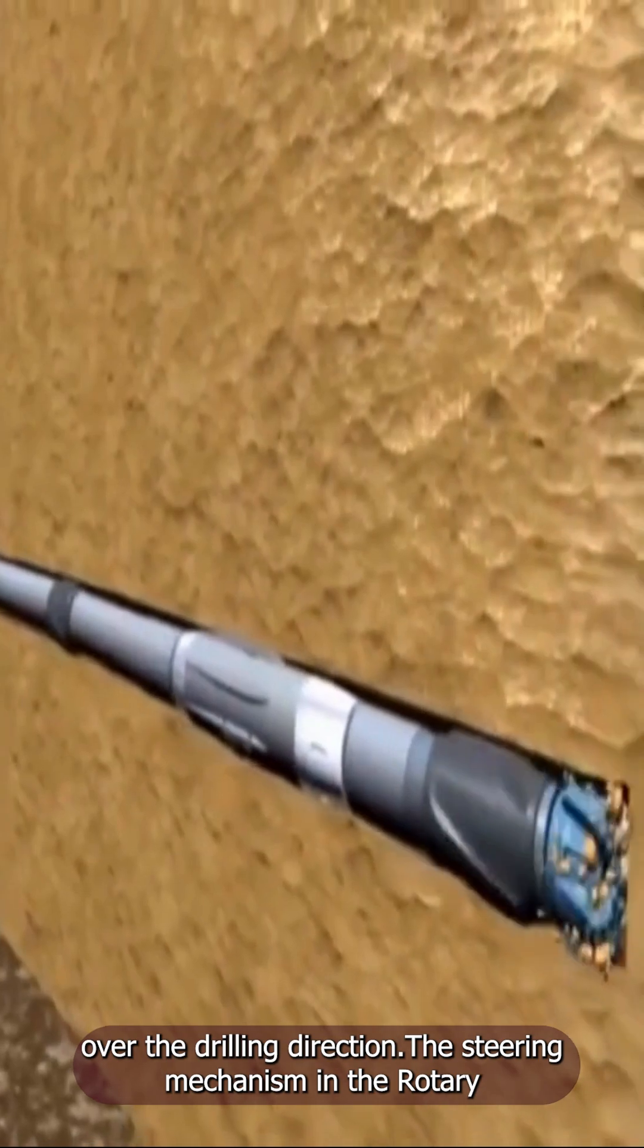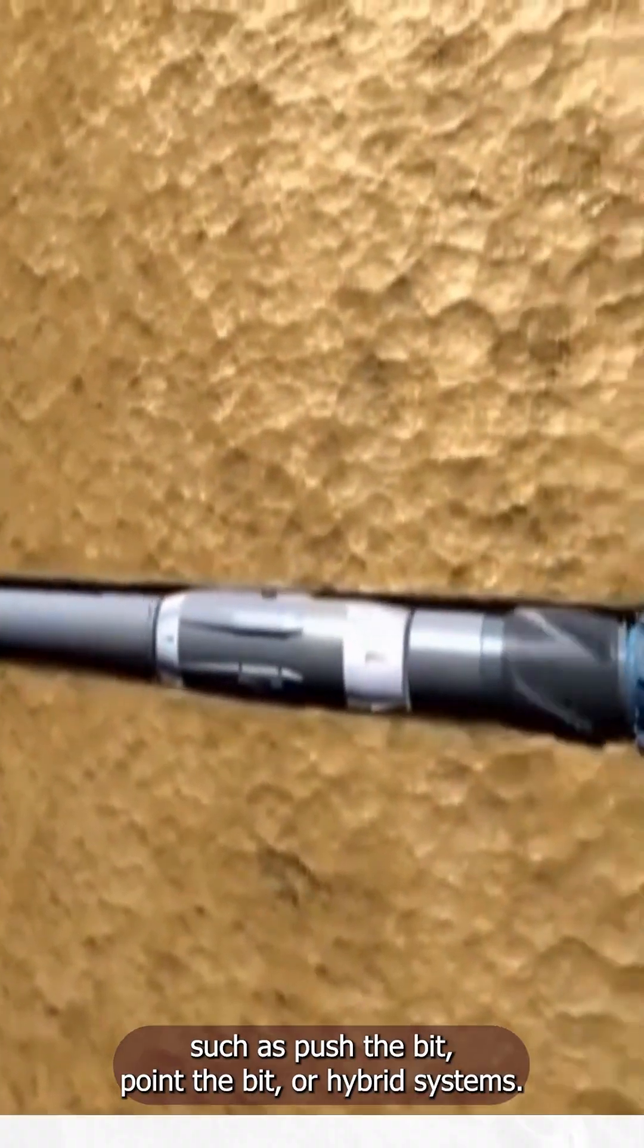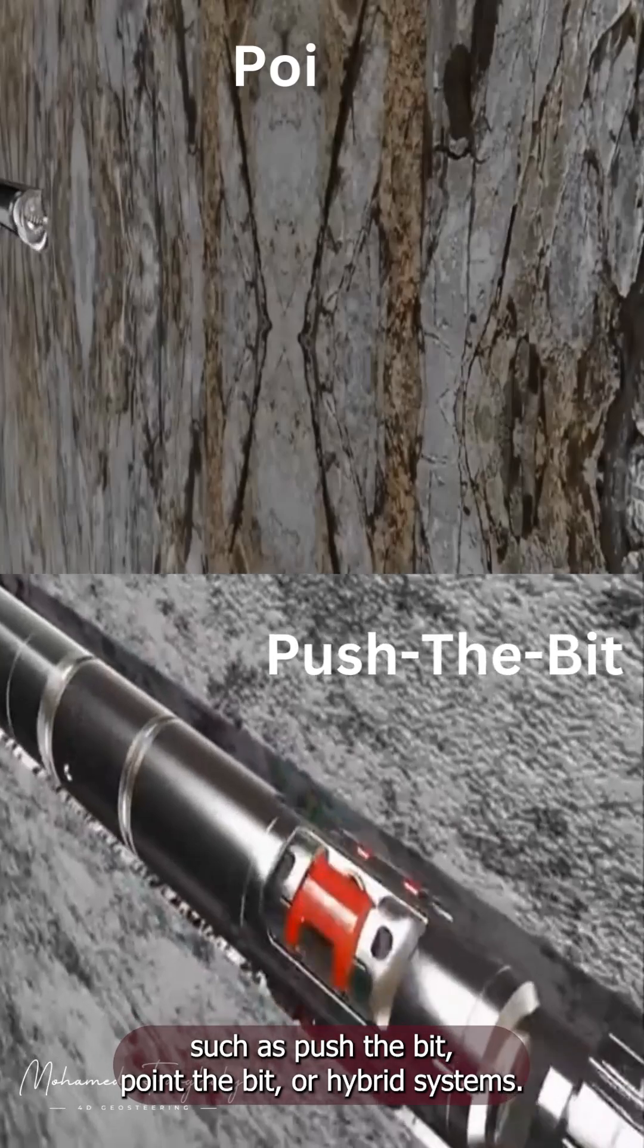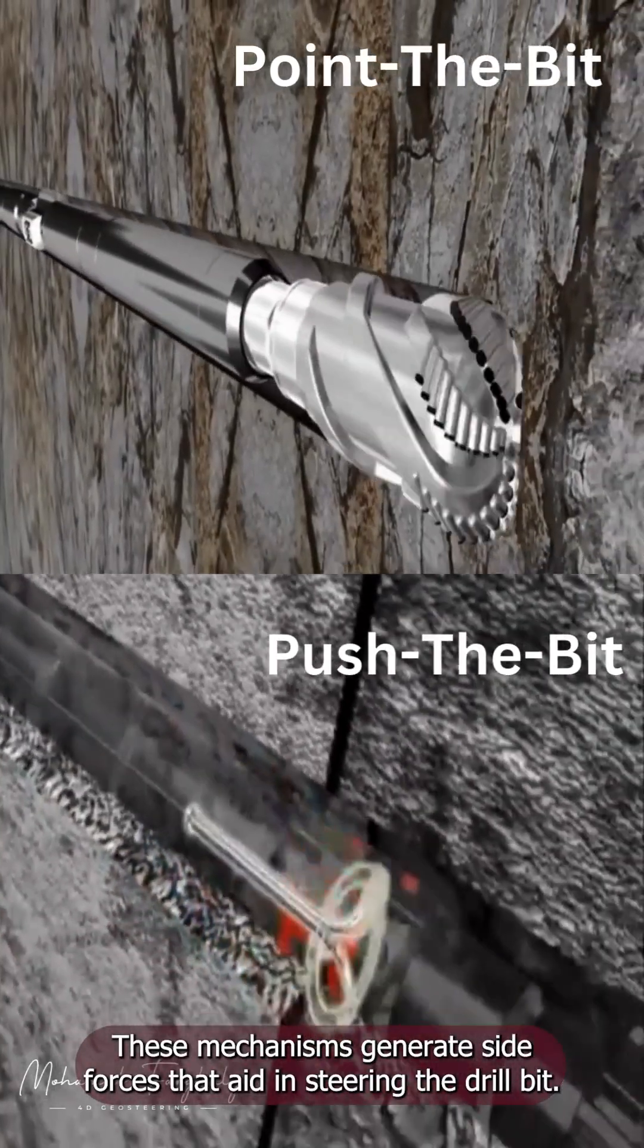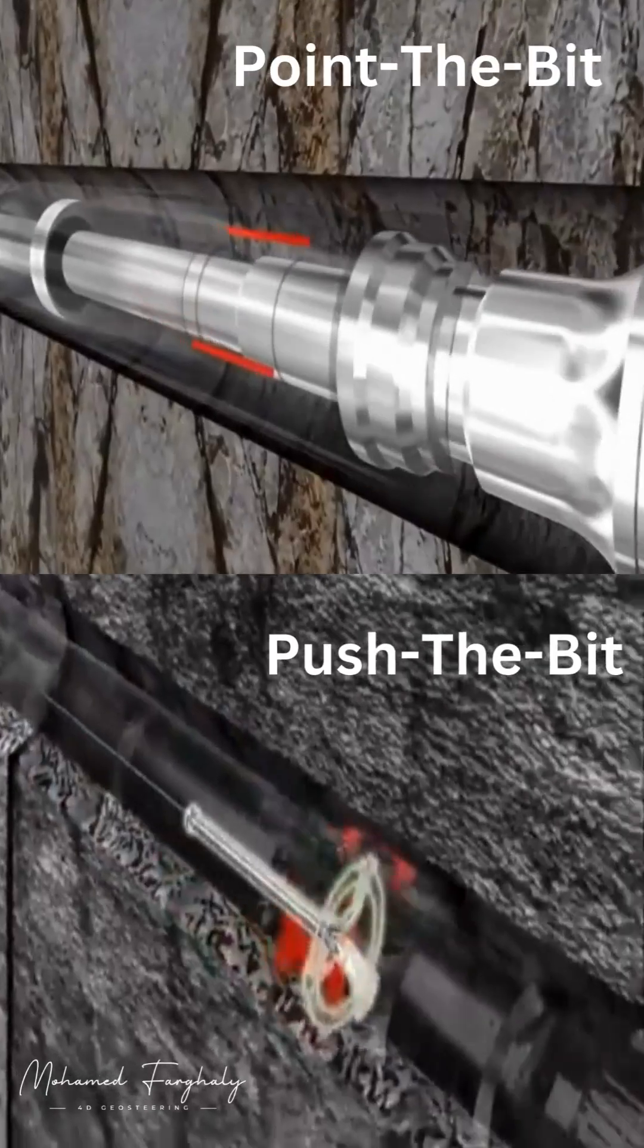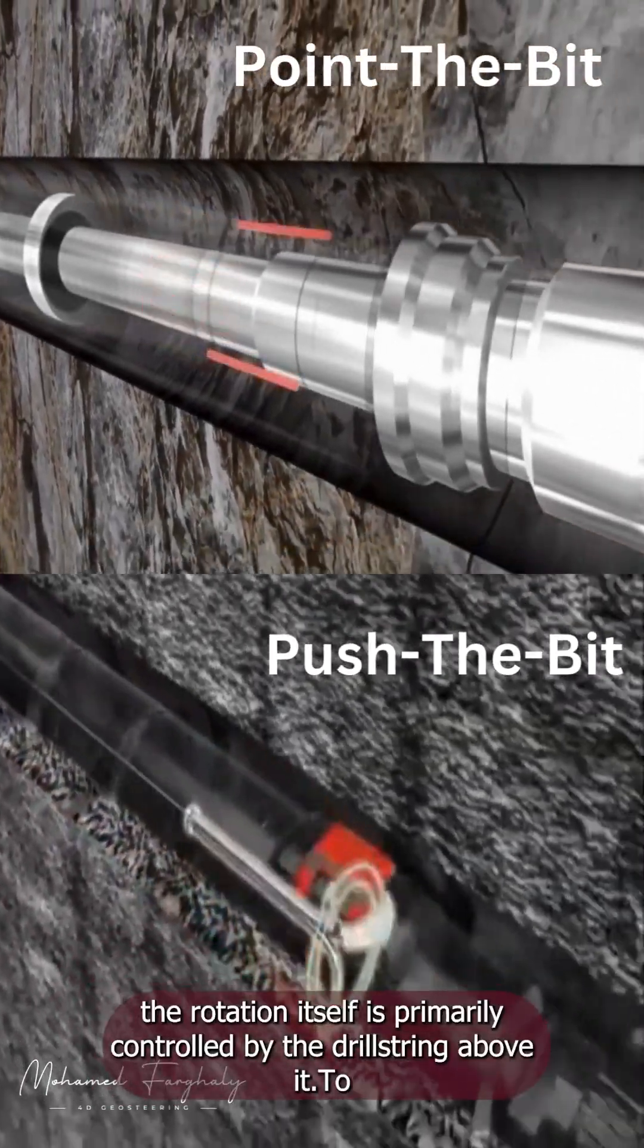The steering mechanism in the Rotary Steerable System employs various innovative designs, such as push-the-bit, point-the-bit, or hybrid systems. These mechanisms generate side forces that aid in steering the drill bit. It's important to note that while the system can steer the bit, the rotation itself is primarily controlled by the drill string above it.